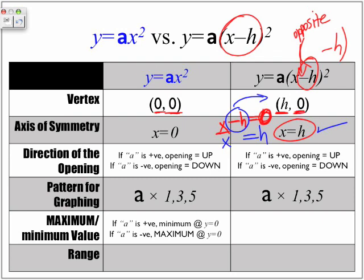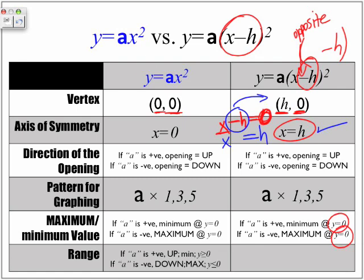Looking at the y value of the vertex: if the a value is positive and we have a minimum value, y equals 0. In terms of range, y is greater than or equal to 0, or y is less than or equal to 0 for a maximum. The same applies in terms of range for the parabola in this format.